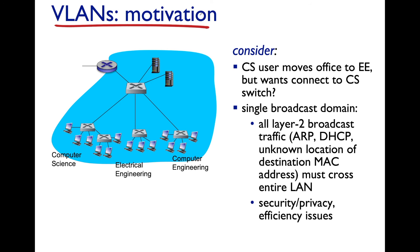Let's look at an important concept for scaling to large networks: virtual LAN, or VLAN. On a typical campus setup, you might have computer science, engineering, and humanities on different switches. A single broadcast domain means all layer-two broadcast traffic — DHCP, ARP queries and responses — propagates across the entire local area network. If a CS user moves to the EE department but still wants to be on the CS network, there are practical challenges.